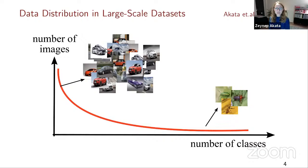If you look at the data distribution in large-scale datasets like ImageNet, we see that we have a long-tail distribution. For some classes like cars, we have a lot of examples, but most of the classes are not represented with many examples. For example, a Spanish firefly has only three examples in ImageNet. These objects are usually rarely found in nature, so taking pictures is difficult, and naming them requires expert opinions — we can't use Amazon Mechanical Turk. My research focuses on the tail of this distribution.